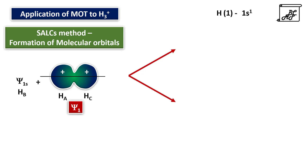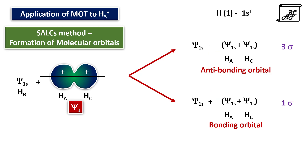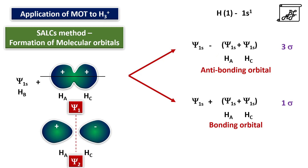Again two are combining, so two will be formed: one will be a bonding molecular orbital termed as 1 sigma, and the other an anti-bonding molecular orbital termed as 3 sigma. For bonding it is addition, and for anti-bonding it is subtraction. Now there is one more group orbital, psi 2, and there is no suitable orbital to overlap with psi 2 — no symmetrically available orbital. Therefore, psi 2 will remain as non-bonding, termed as 2 sigma.